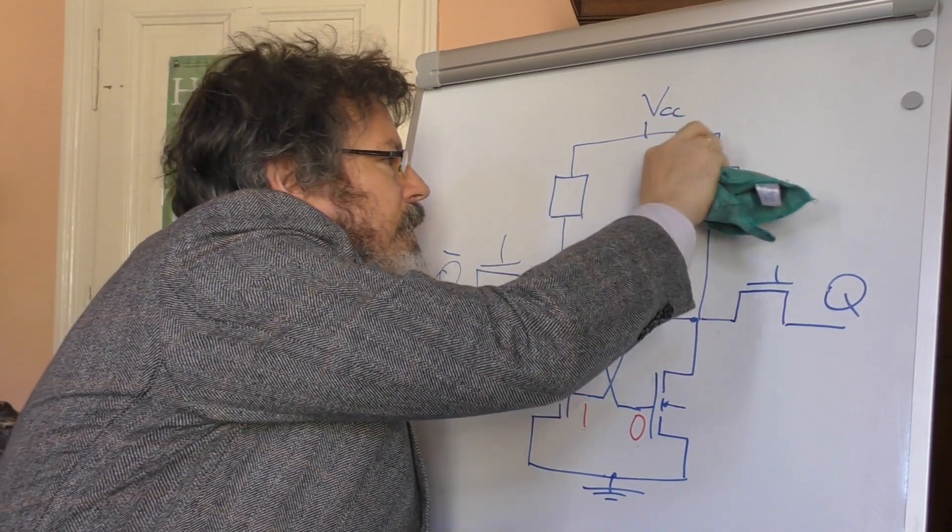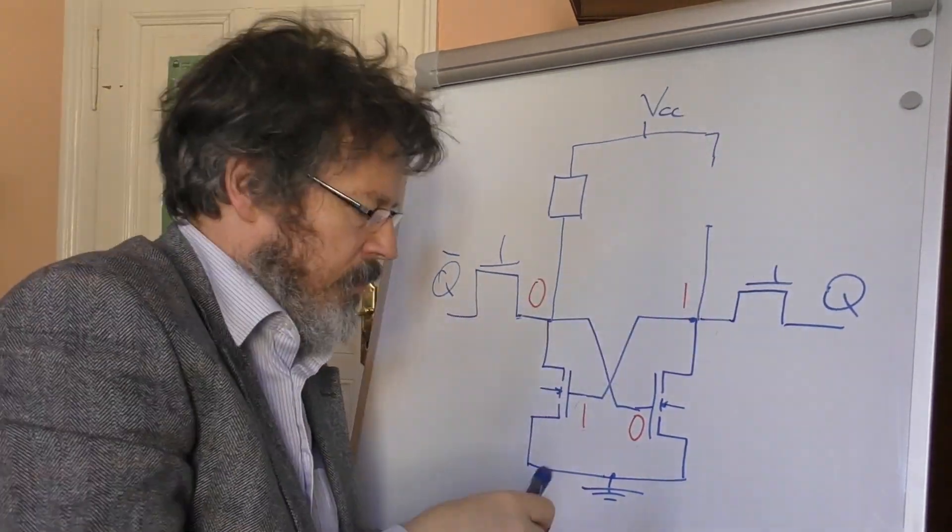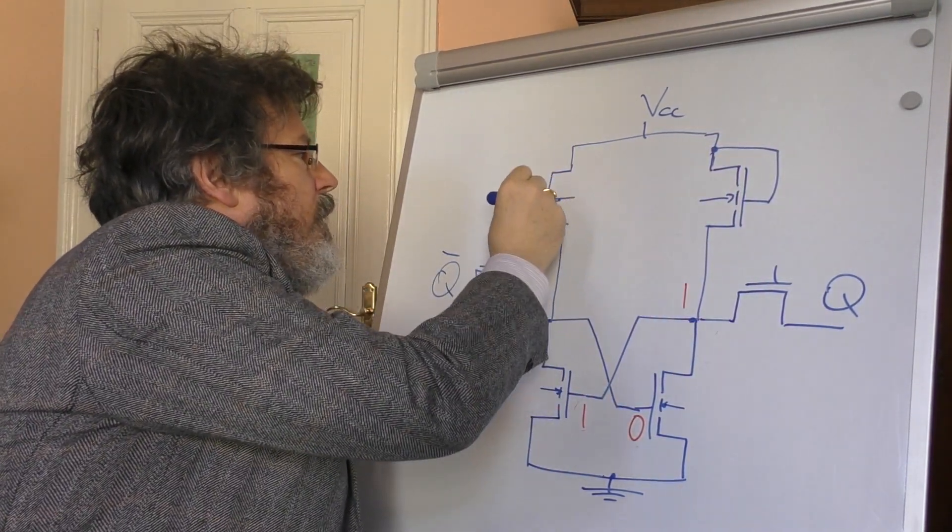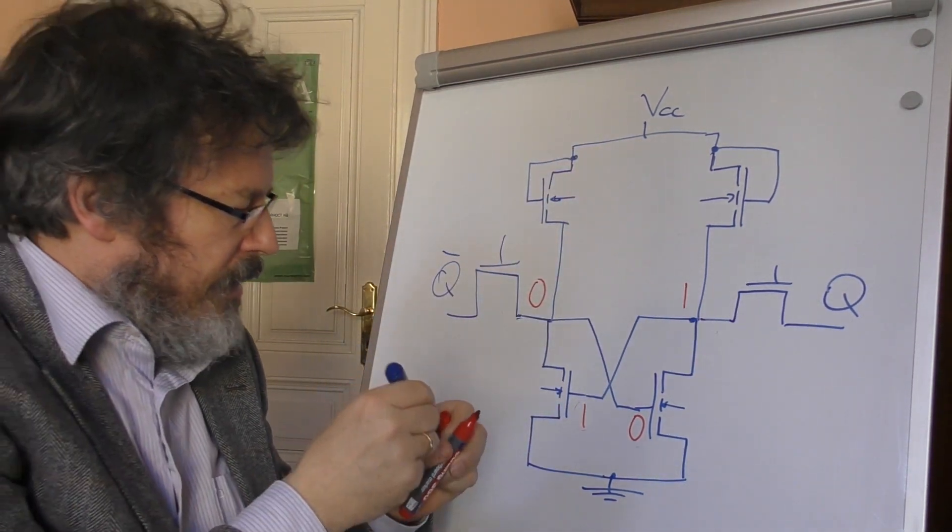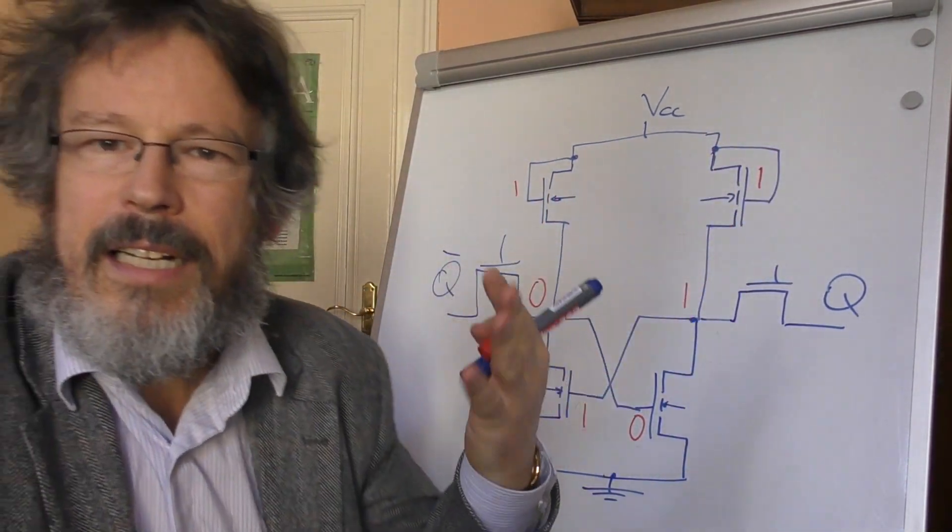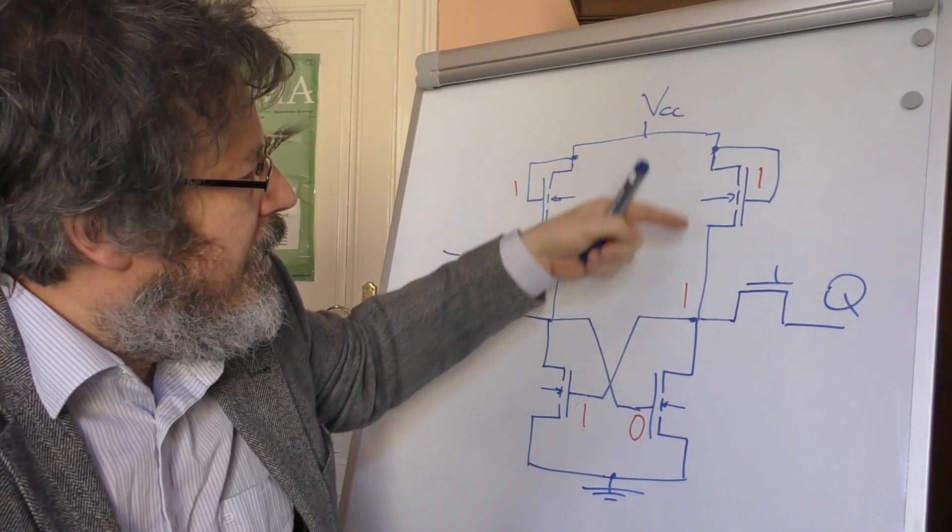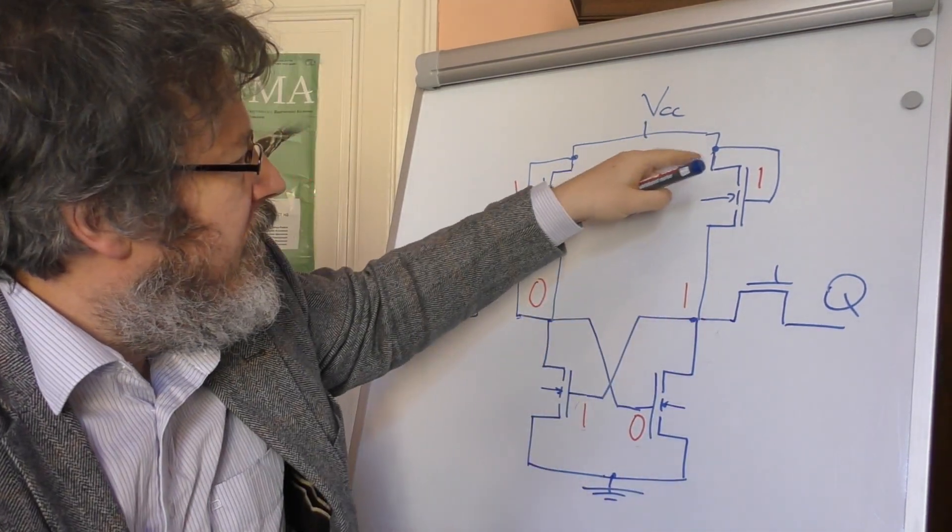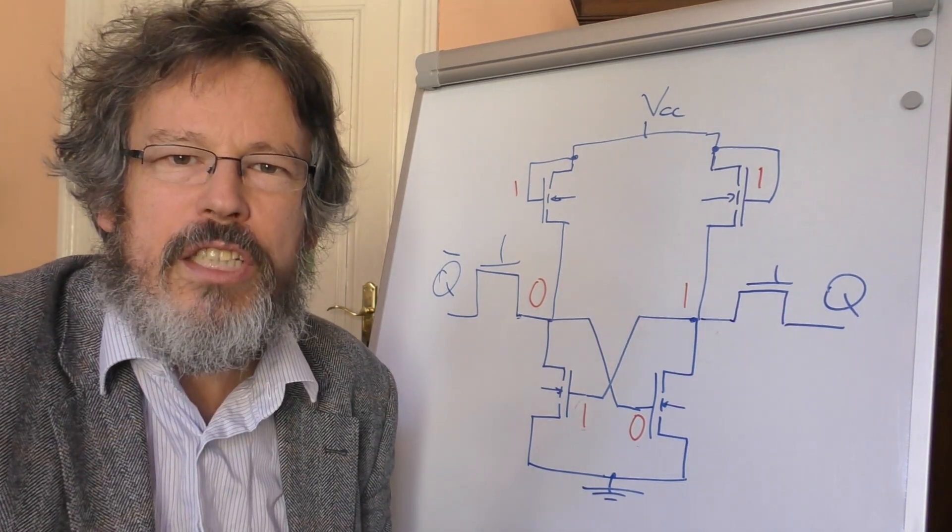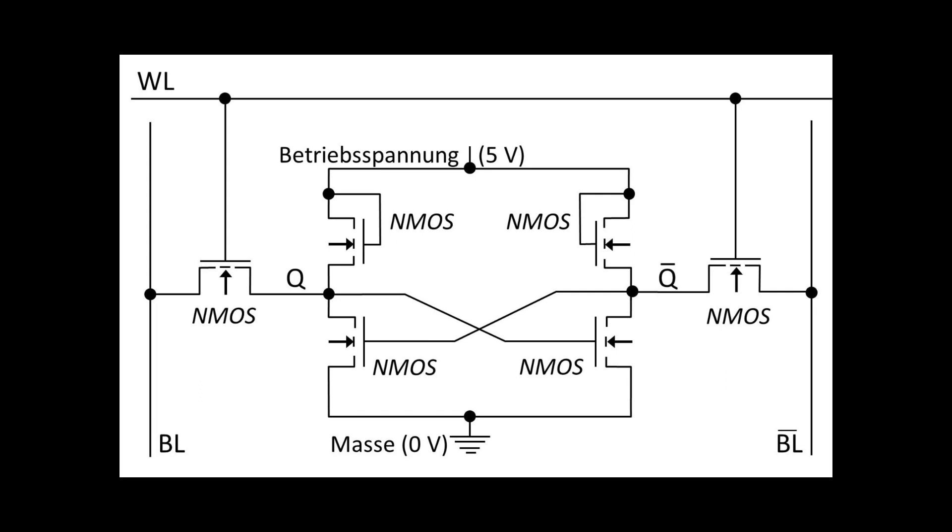This then looks as follows: we have an NMOS transistor here whose gate is permanently connected to VCC, and we also replace this ohmic resistor with an NMOS transistor, and also connect its gate permanently to VCC. That means both gates have a 1 applied permanently. That means the channel is basically there, but we know this channel in this configuration is actually only usable if a low potential were to be conducted through here. Now we have a high potential applied here, that means the channel breaks down, but this can, if done cleverly, emulate an ohmic resistor quite well. And in this way we have here a typical so-called NMOS static RAM cell consisting of 6 transistors.